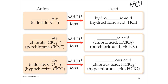You could technically call HCl hydrogen chloride, but hydrogen is actually a non-metal, not a true cation. So when hydrogen is your positive ion, you use the acid name rather than the ionic name. That makes it hydrochloric acid.